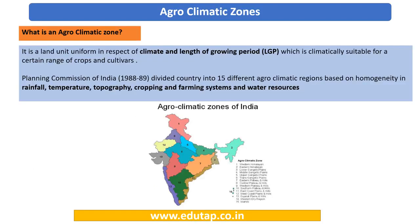First, we will see what is an agro-climatic zone. An agro-climatic zone is basically a land unit which is uniform in respect of the climate and the length of the growing period. This description was given by the Planning Commission in 1988-89, which divided India into 15 different agro-climatic zones. These zones are based on the homogeneity of natural factors like topography, temperature, rainfall, cropping and farming systems, and the kind of water resources used.